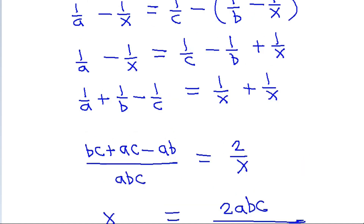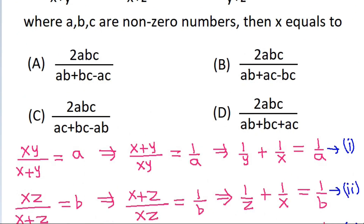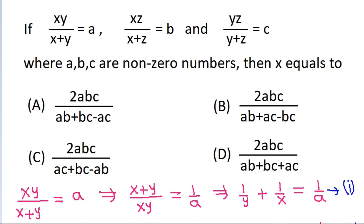So we get x is equal to 2abc by bc plus ac minus ab. The correct option is option C.